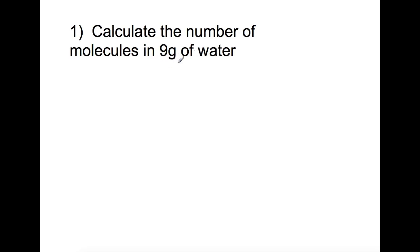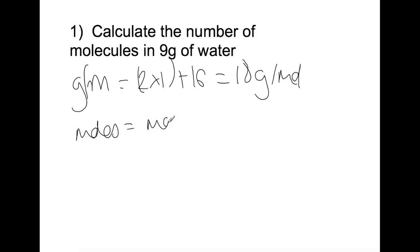The first thing we need to do is to work out how many moles are present within our water, so we're going to do a gram formula mass. We have 2 times 1 for hydrogen plus 16 for oxygen—that gives us 18 grams per mole. Number of moles is mass divided by gram formula mass, so we have 9 grams divided by 18 grams per mole.